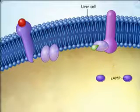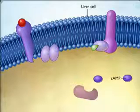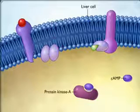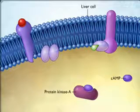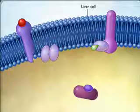The cAMP formed at the inner surface of the membrane diffuses within the cytoplasm, where it binds to and activates protein kinase A, an enzyme that adds phosphate groups to specific cellular proteins.